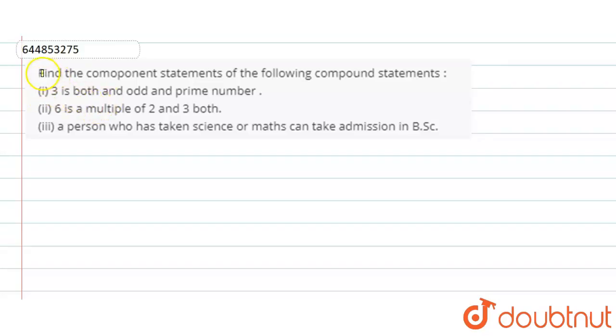Hello everyone, today our question is: find the component statements of the following compound statements. Here we are given some statements that are compound statements using the connective 'and', so I need to separate them into two component statements.